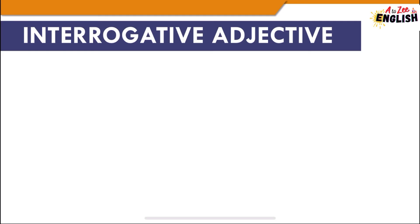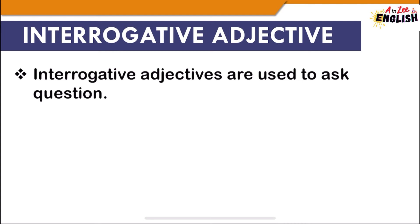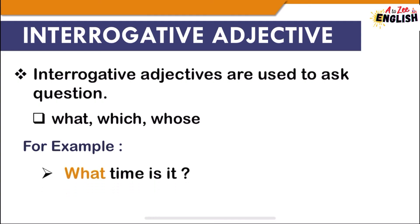Next is interrogative adjective. Interrogative adjectives are used to ask questions — such as what, which, and whose. An interrogative adjective must be followed by a noun or a pronoun. For example, 'What time is it?' and 'Whose car is this?'